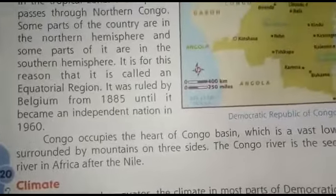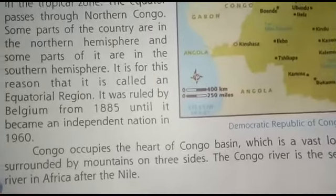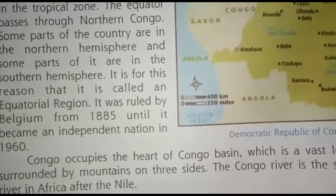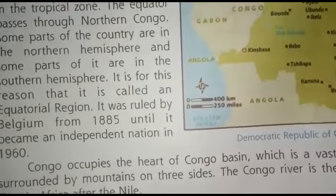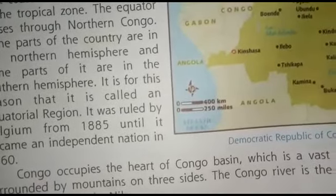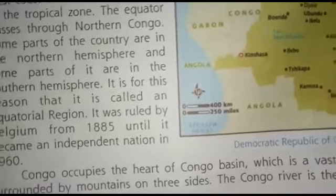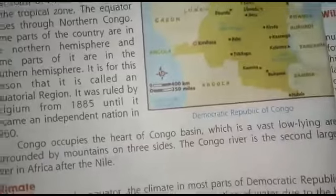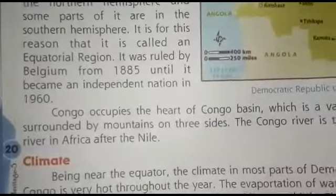The Congo Basin is the heart of Congo, which is the lowest flowing area surrounded by mountains on three sides. The Congo River is the largest river in Africa after the Nile.